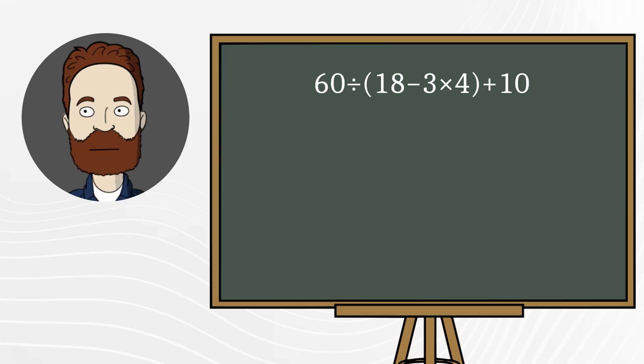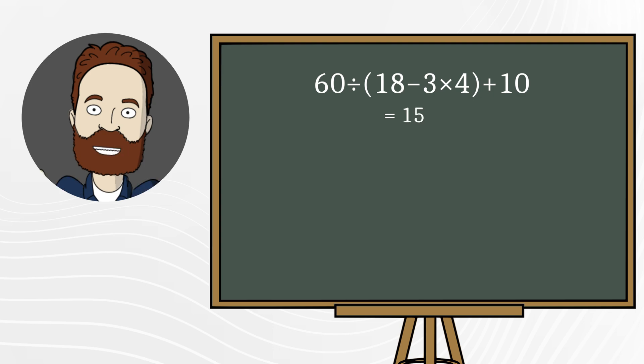Often it's solved like this. People see parentheses and think, I need to solve everything inside from left to right. 18 minus 3, we get 15. Then multiply by 4, that's 60.